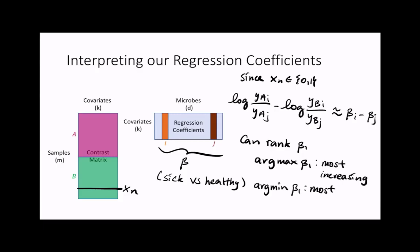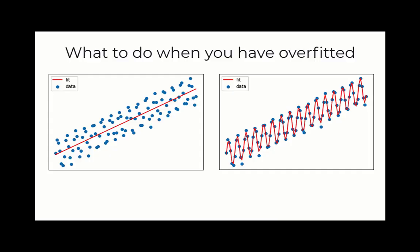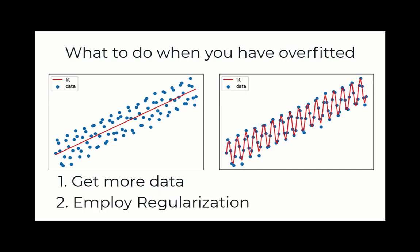The microbe with the smallest coefficient will be observed to be decreasing the most relative to all other microbes. We need to emphasize the term relative, because we only know the log fold change up to some constant value—we won't know for certain if these microbes are actually increasing or decreasing. If you have an overfitted model, one possibility is to get more data from publicly available resources or by sequencing new samples. Alternatively, you can employ a technique known as regularization that creates a bound on your regression coefficients to guard against overfitting.